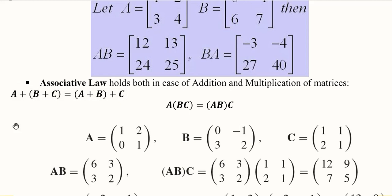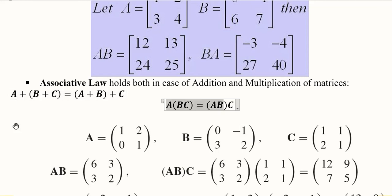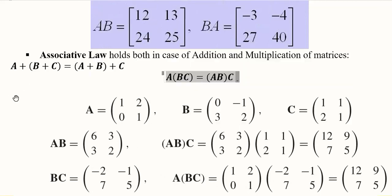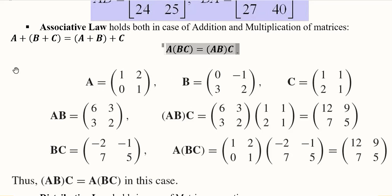The associative law holds for both addition and multiplication. For multiplication, we have three matrices a, b, and c. We first find the product a·b — keeping a before b — then multiply that result by c. This gives us the right-hand side value of (a·b)·c.